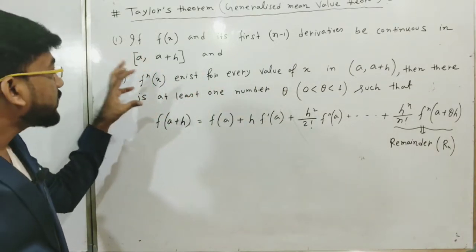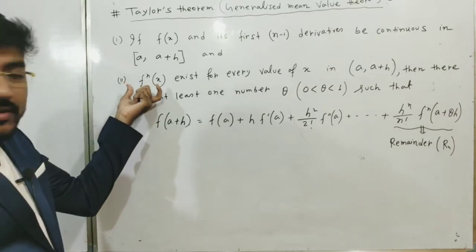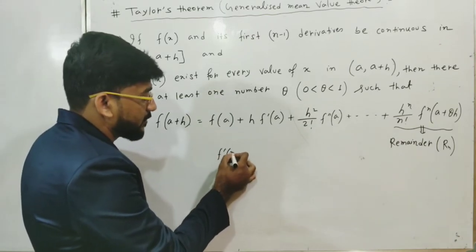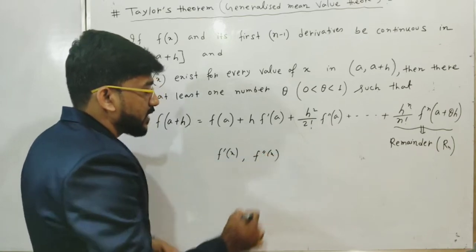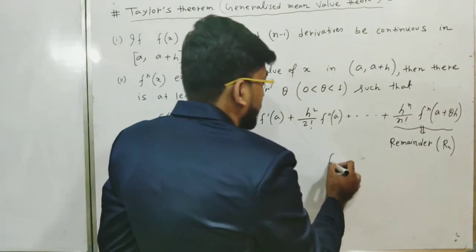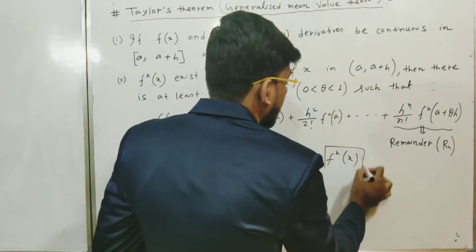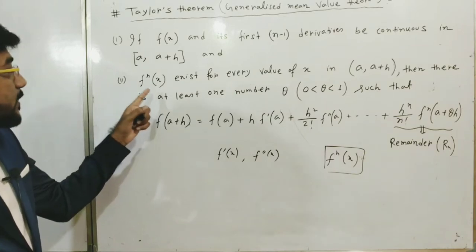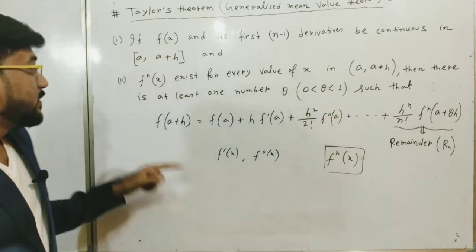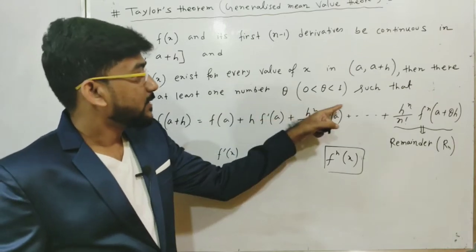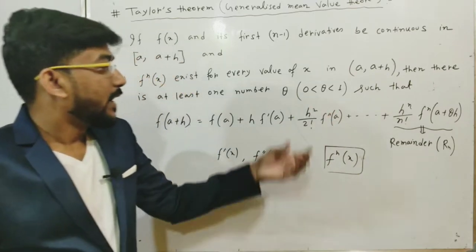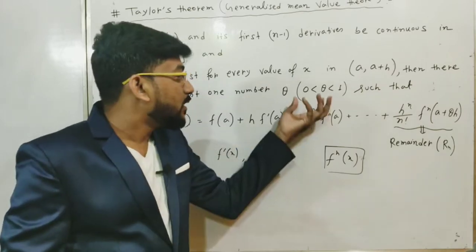The second criteria is that f⁽ⁿ⁾(x) — the n-th derivative of f(x), denoted like f⁽ⁿ⁾(x) in the generalized case, just as we write f′(x) for the first derivative and f″(x) for the second — exists for every value of x in the open interval (a, a+h).